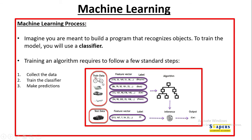For a machine, the attributes used for training are called a feature vector. For example, for a cycle image, the machine sets certain attributes in the form of numbers — that is the feature vector — and labels it as 'bicycle.' Similarly, feature vectors are set for different objects and labeled as bicycle, boat, car, and plane. These feature vectors and labels are fed to the algorithm, and through continuous iteration and training with different data objects, it learns to classify things. Hence this is called a classifier.